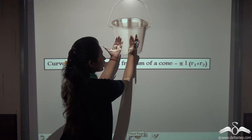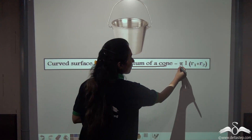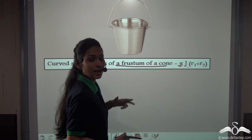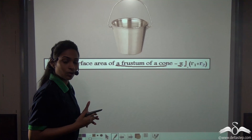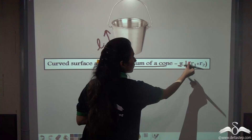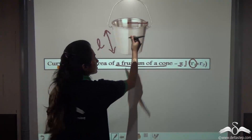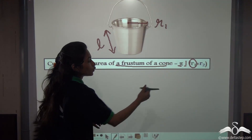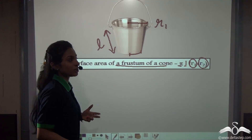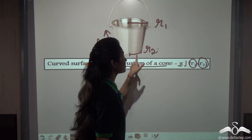The curved surface area of a frustum of a cone can be found using the formula π × L × (R1 + R2). Here, L refers to the slant height of the frustum — just as a cone has a slant height, so does the frustum. R1 refers to the top radius and R2 refers to the bottom radius of the frustum.